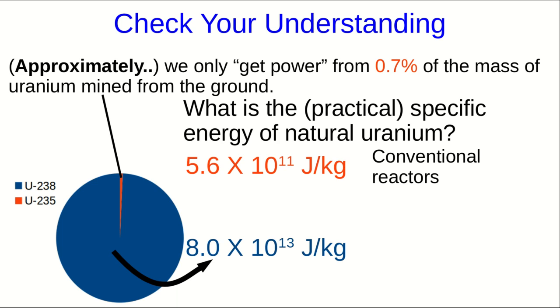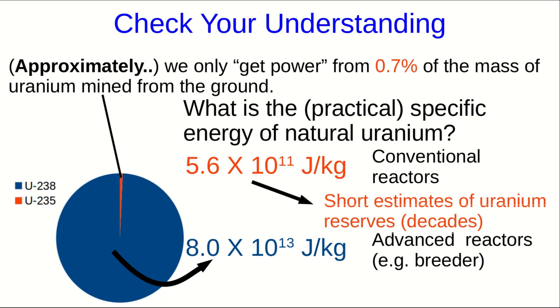However, the more optimistic figure of about 8 times 10 to the 13 joules per kilogram, which would assume then that we can extract the energy from fission of U-238, would be correct for advanced reactor designs like breeder reactors. If you see short estimates of uranium reserves, for example, in the region of decades, those people are probably assuming conventional reactors, which can only get power from the U-235. The longer estimates of uranium reserves will be assuming the use of advanced reactors, such as breeder reactors.